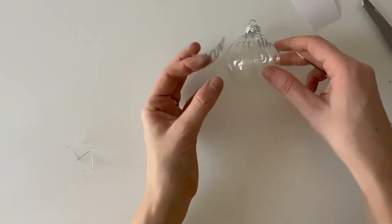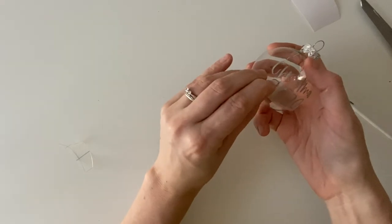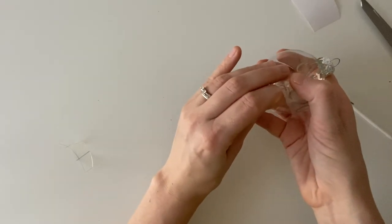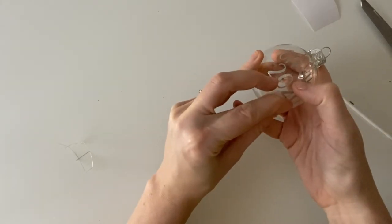And then putting the 2020 on there as well. That one was much easier because there's a lot less letters to deal with. Again, just going super slow, pushing things down if they peel back up.